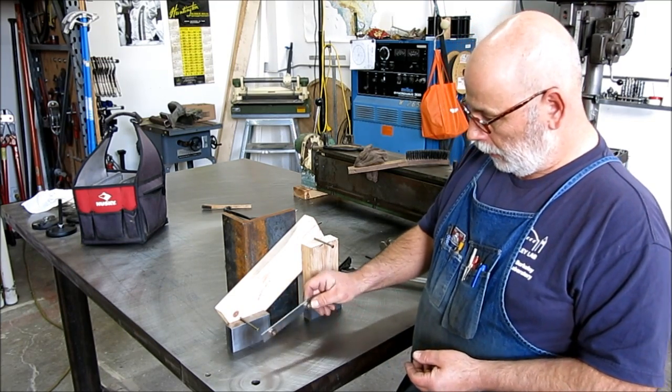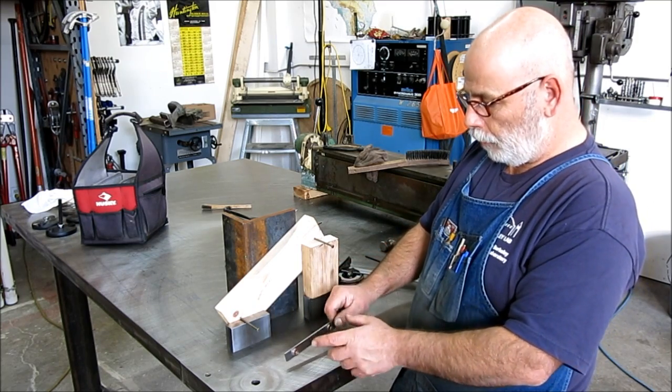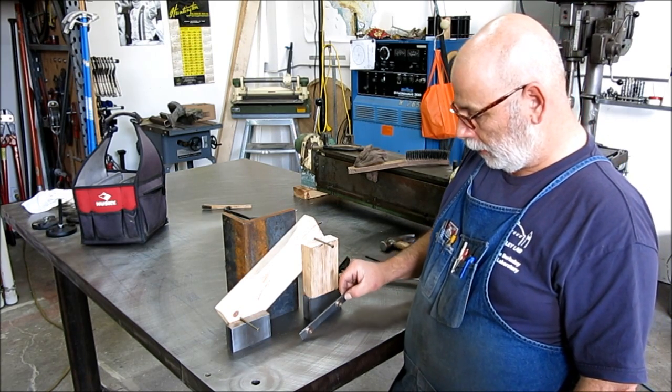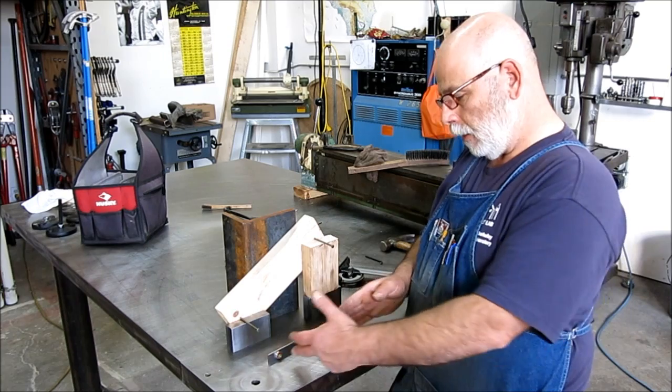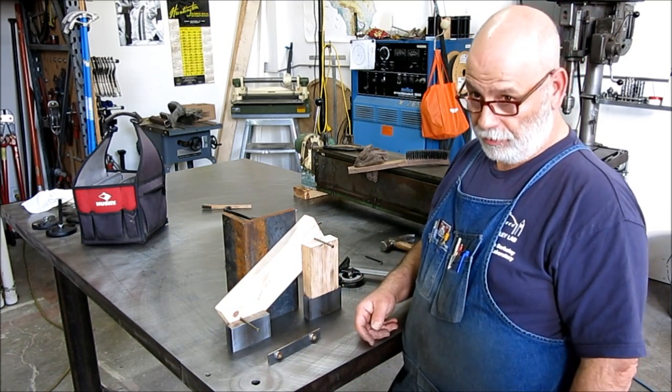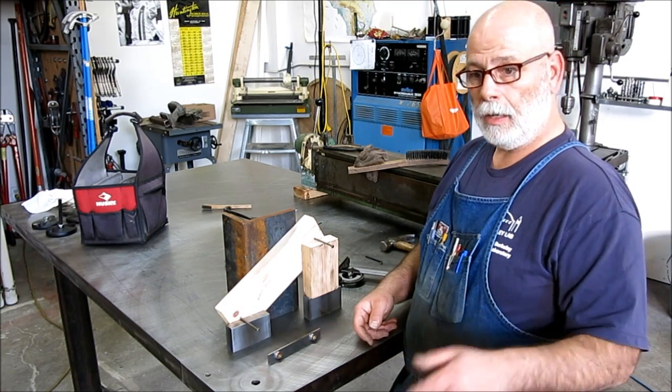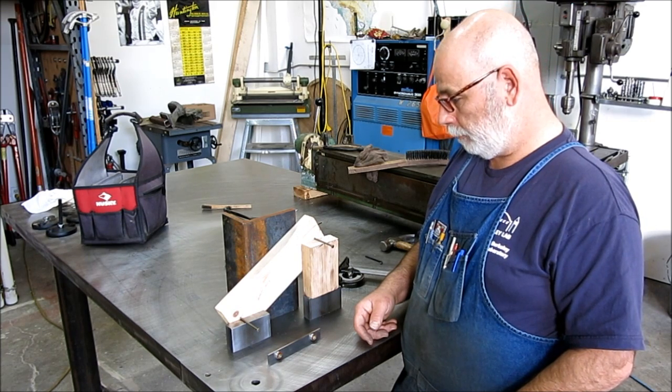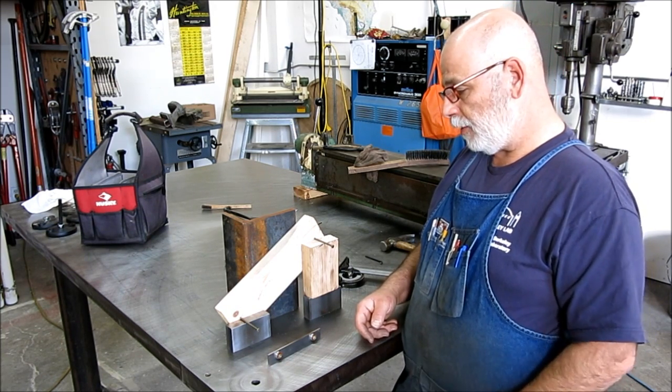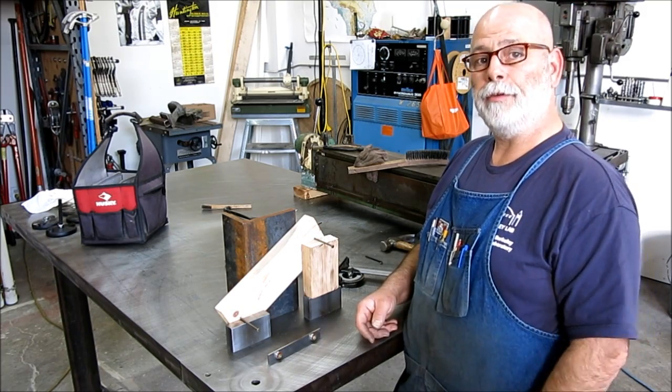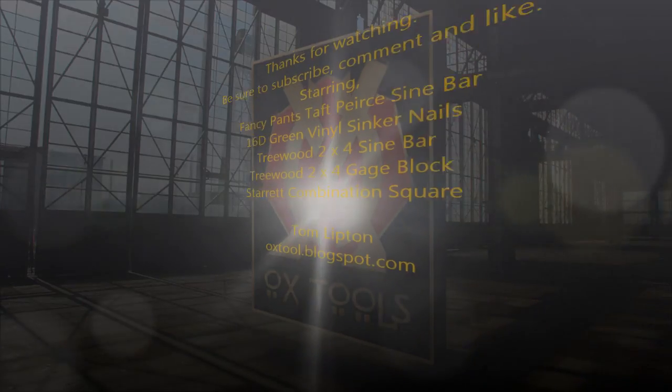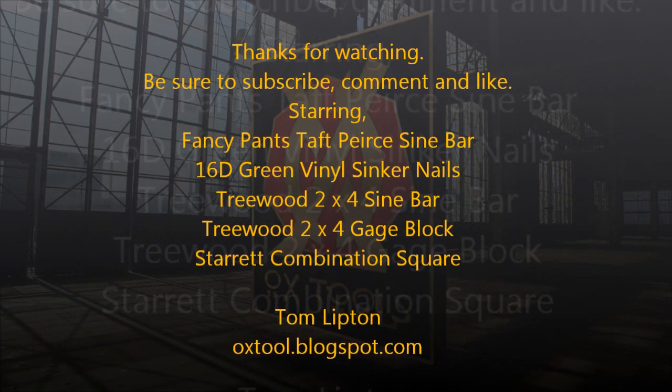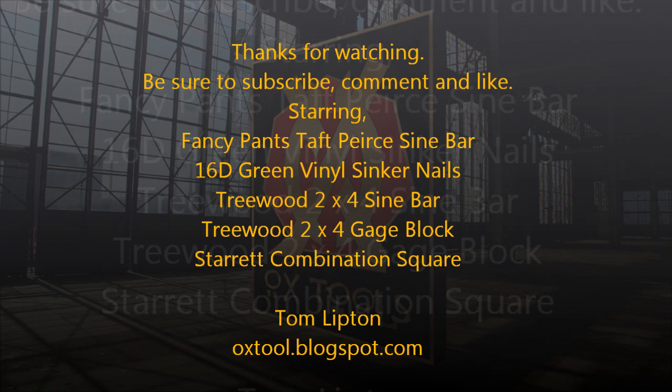And this gives you a way to make a fairly precision little sine bar. And then, deconfigure it and reconfigure it anytime you want. Now, keep in mind that the longer the distance between these center rolls, the less sensitive the whole system is. This happens to fit in a Kurt vise really nicely. So, you know, four or five, three, four or five, six inches is about what you want for working in the mill. Anyway, hope you like that. And you know, throw some comments up, if you got questions and try some of this stuff out yourself. It's kind of fun. All right. Thank you.